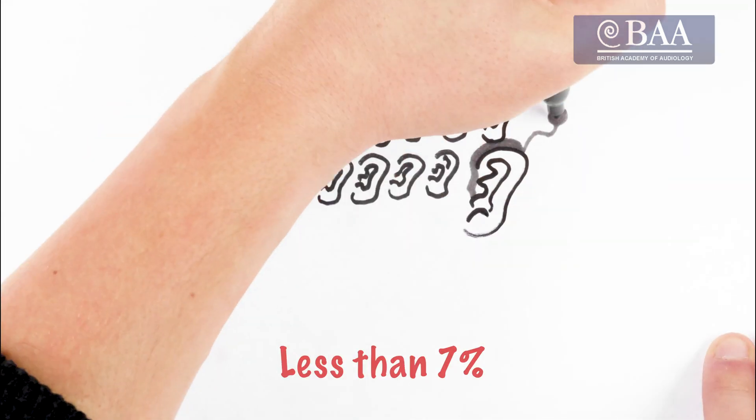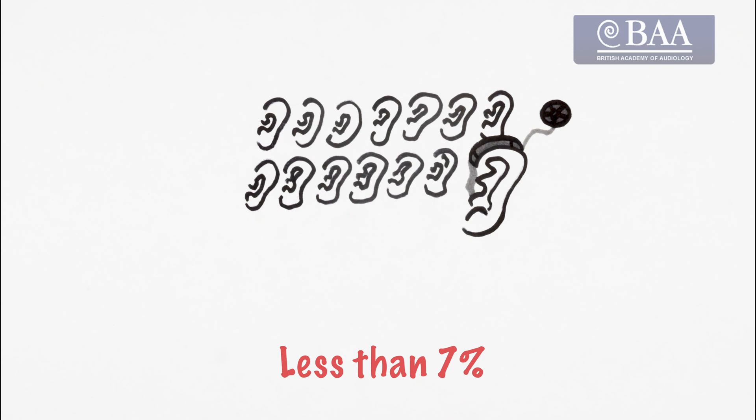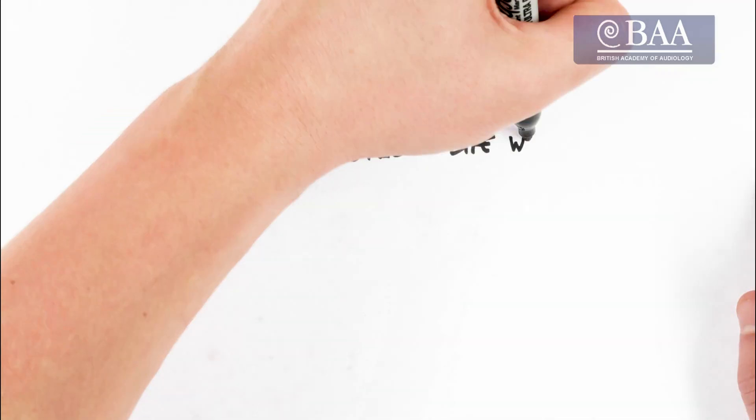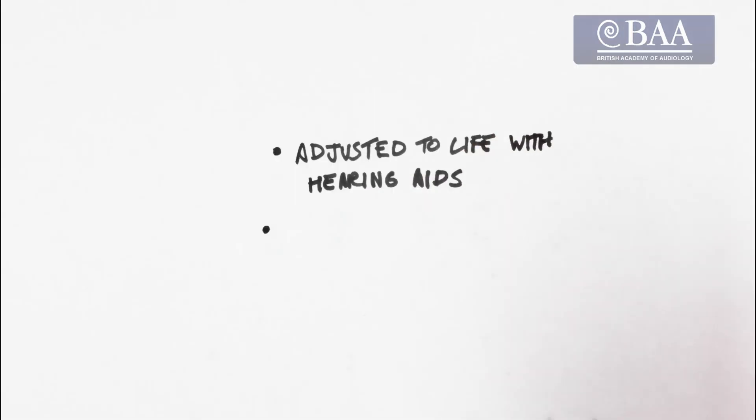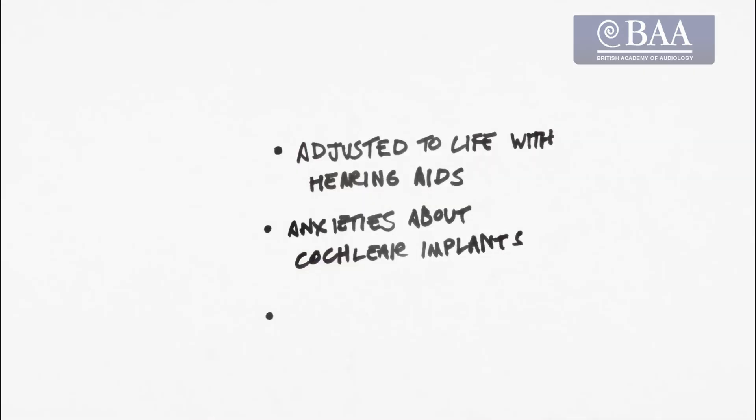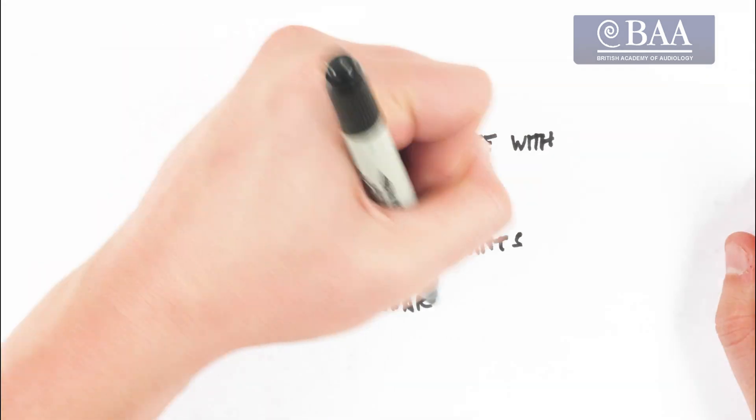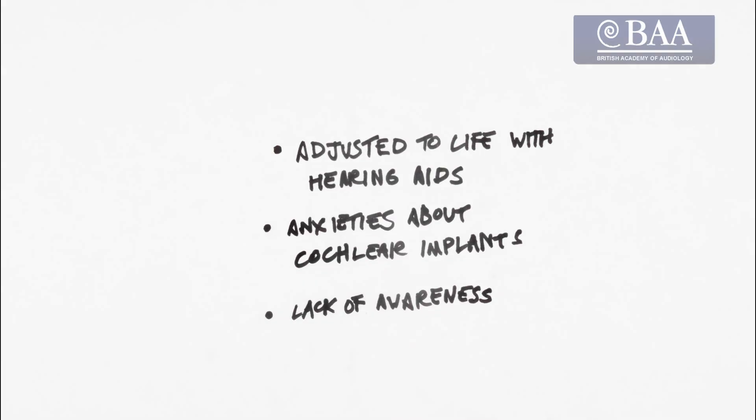it is estimated that less than 7% of eligible adults in the UK have one. This may be because adults have learned to live their life with hearing aids, because of anxieties, fears or preconceptions around cochlear implants, or because eligible adults are simply unaware of them.